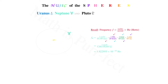This frequency must be raised 40 octaves in order to be heard; hence we multiply through by 2 to the fortieth power, yielding a frequency of 211.4311423 hertz, approximately an A flat.